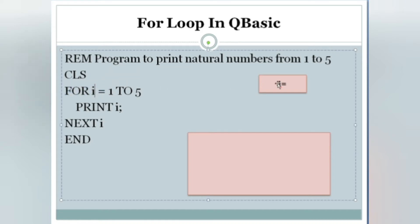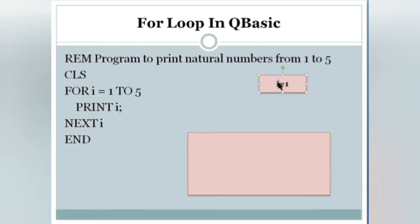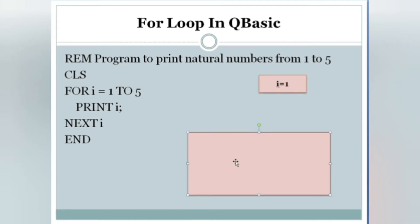When the loop starts, 'FOR i = 1' means i value is one. It checks the condition: is i in the range of one to five? Yes, condition is true. When condition is true, it executes PRINT i — i means one — and one is printed on the output screen.